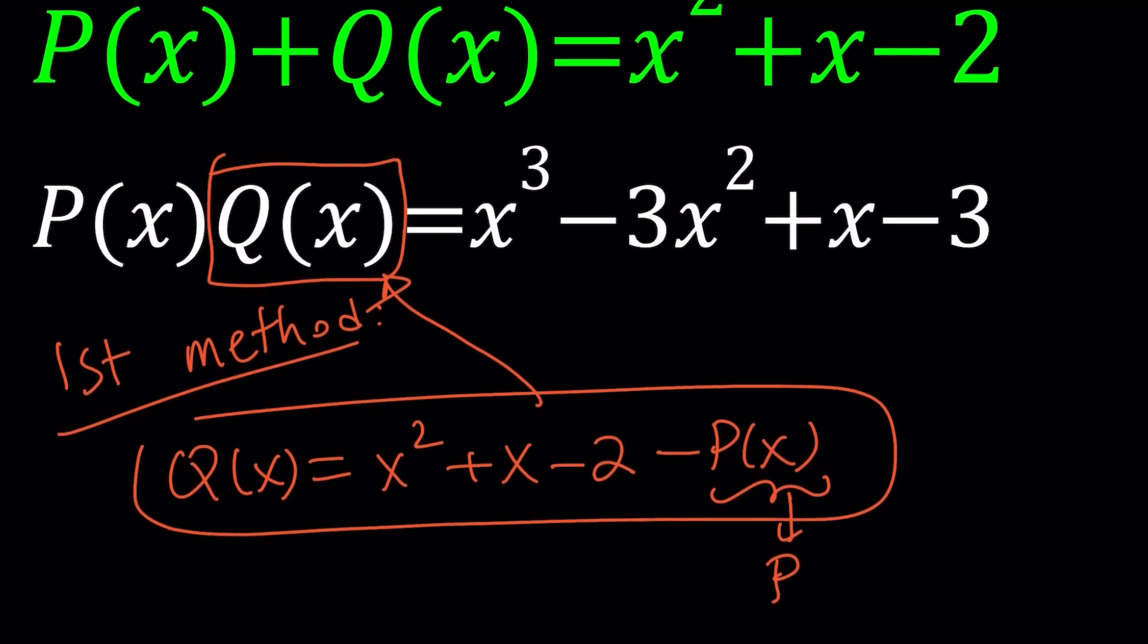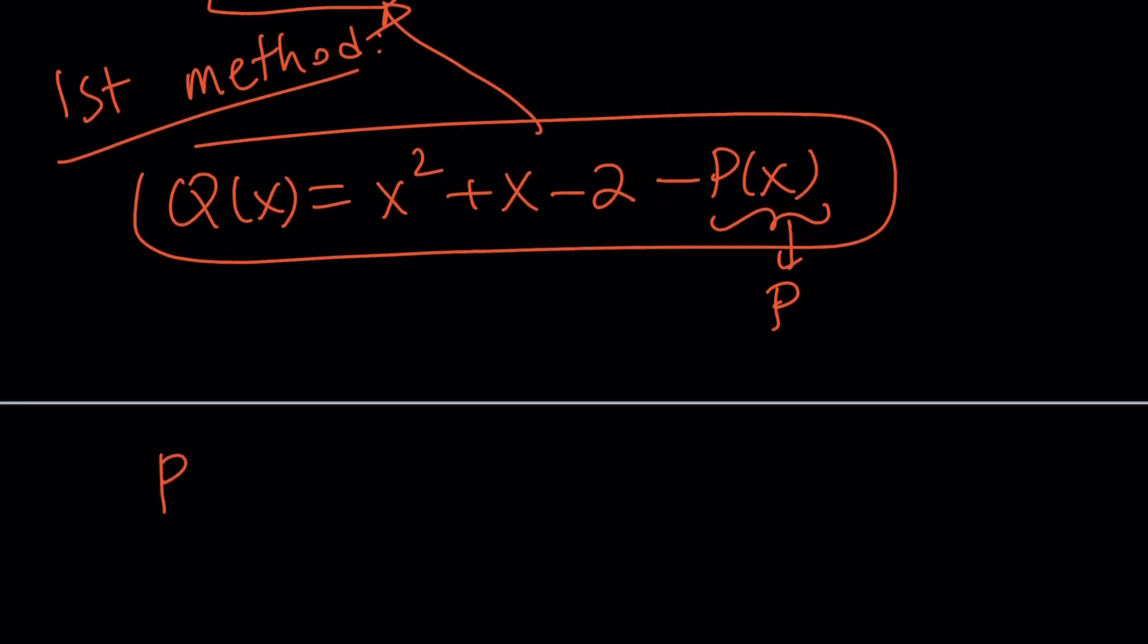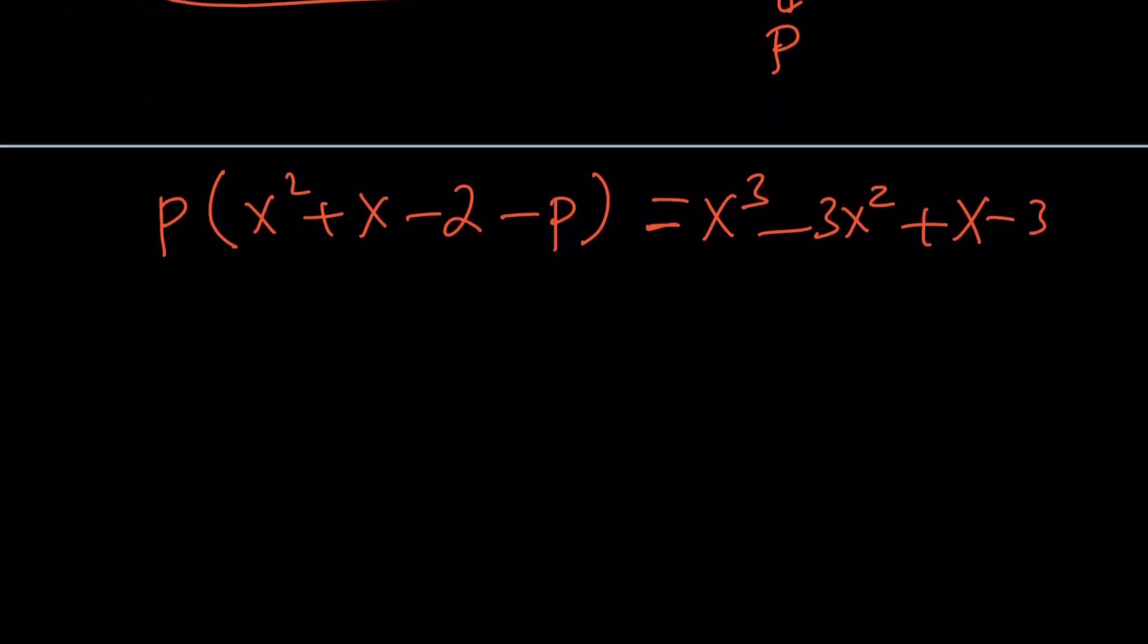So we're going to get the following: P(x), which is P, times Q(x), which is x² + x - 2 minus P, equals the cubic, which is x³ - 3x² + x - 3, right? I know what you're thinking at this point - come on, this is too easy, way too obvious. You can just do this. Okay, let's just wait. Don't spoil the surprise until we get to the second method.